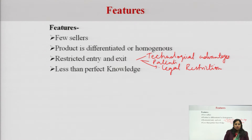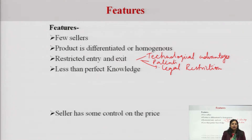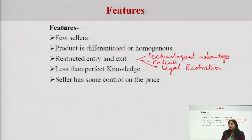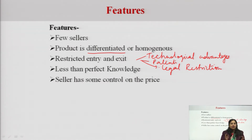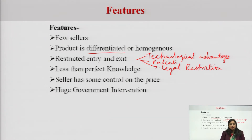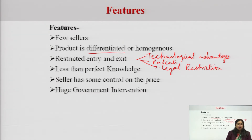Fourth, there is less than perfect knowledge — buyers and sellers do not have perfect knowledge of the market. Fifth, the seller has some control over the price. Why some control? Because the product is differentiated and there are only a few players, so they do not have full control. Sixth, there is huge government intervention in the form of legal restrictions. In automobiles, electronics, pharmaceuticals, banking, and insurance, there are huge restrictions on entry of new players, and one prominent feature is that they require huge capital investment, which becomes a barrier to entry as well.